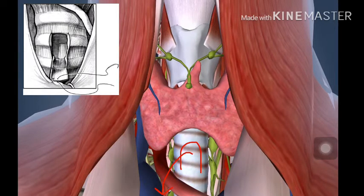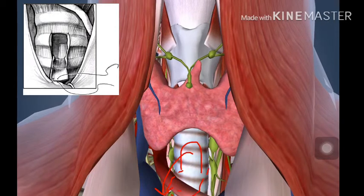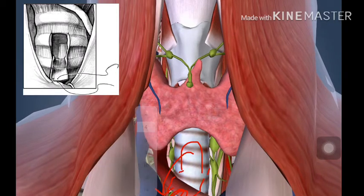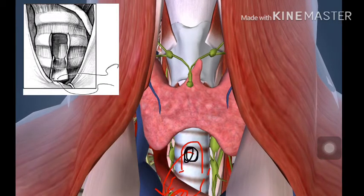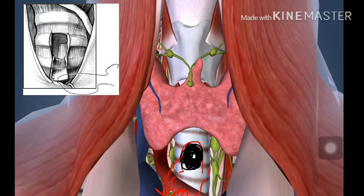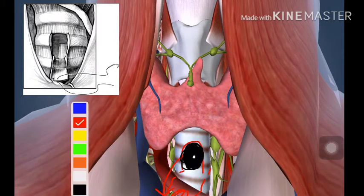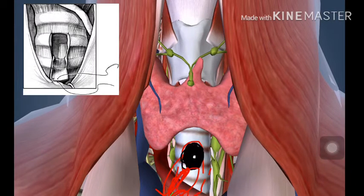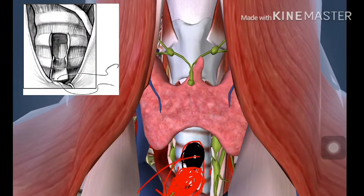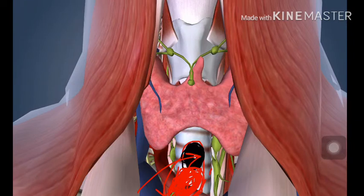You create an inverted U-shaped flap and open up the trachea below it. You suture this flap to the skin, forming the platform through which you slide the tracheostomy tube inside. This concludes the overview of the muscular triangle and its clinical applications.